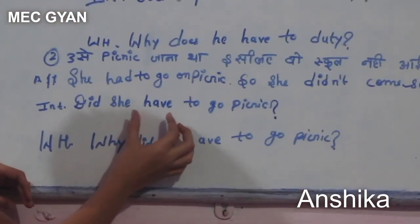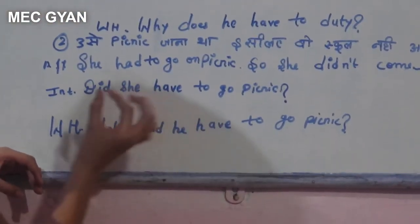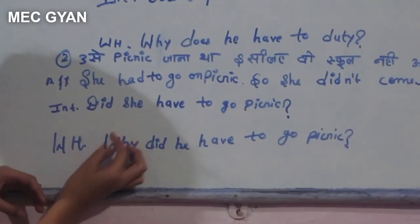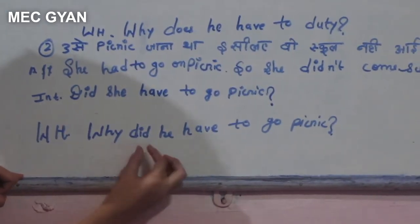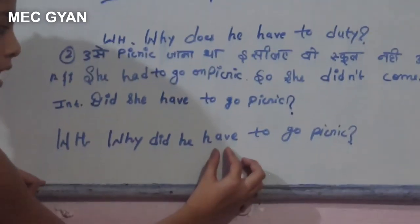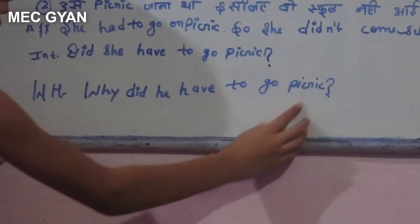Here the first form of verb is used because in 'had to' sentences the second form is applied. Why did he have to go on the picnic?